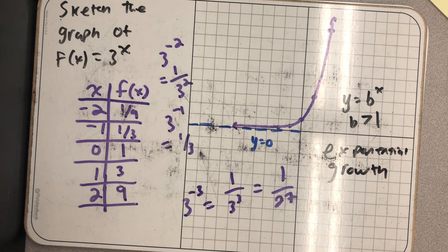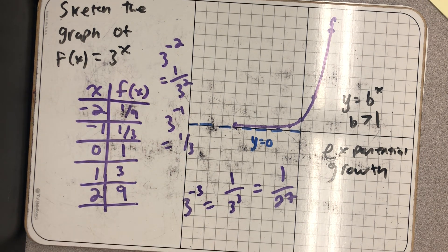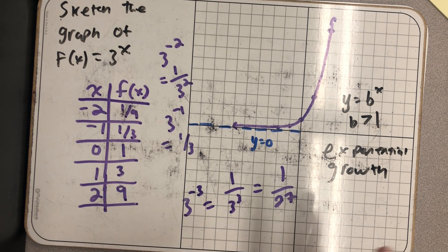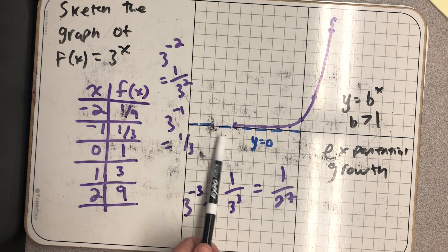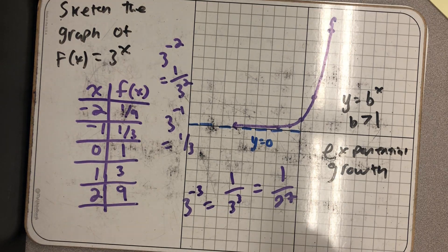In our next video, we're going to see what happens when the base is between 0 and 1. And after that, we're going to transform our graphs and shift them around. And when I do that, I always want to pay attention to where that horizontal asymptote goes.